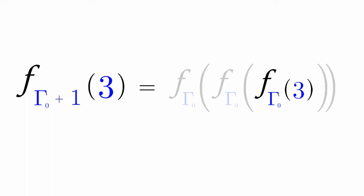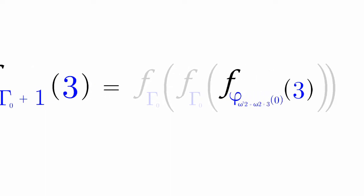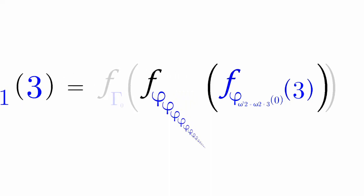This breaks down into three copies of the gamma nought function. F gamma nought of three, as we've known, is equal to phi omega cubed zero of three. Now f gamma nought of this whole thing. That's phi of phi of phi of phi, f gamma nought of three times. Now f gamma nought of this whole thing. This is a lot bigger.